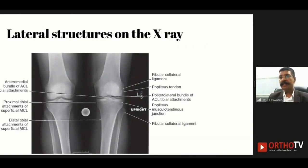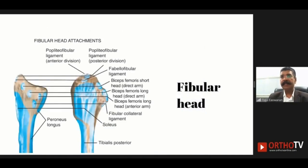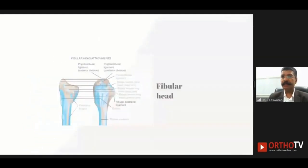Similarly, lateral structures can be seen on imaging — both on X-ray — and this knowledge can be used to assess lateral-side tunnels on imaging. It is important to know the anatomy of the fibular head. You don't need to remember every attachment; remembering the attachment of the fibular collateral ligament and the popliteal ligament is more than sufficient, and is very useful for lateral reconstructions.